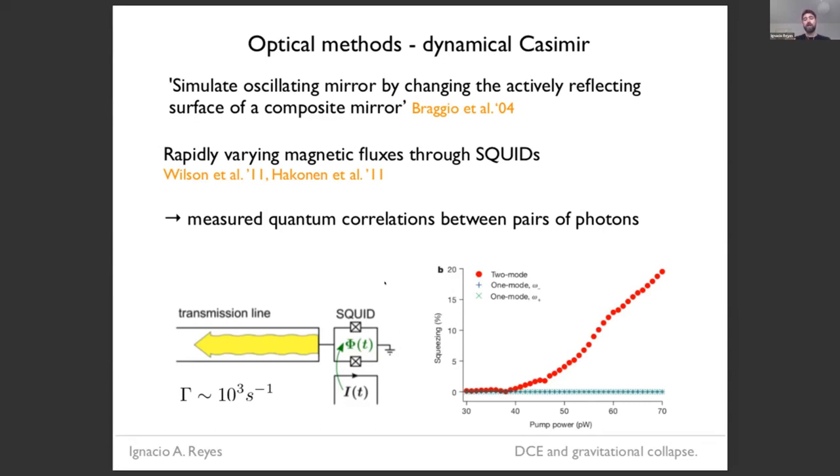And the really cool thing is that not only were they able to measure the photons, but they were able to check that the pairs of photons that came out were in a particular quantum state, a two mode squeeze state, which is amazing. This would be like the analog of being able to measure the two Hawking pairs and checking that they're actually in a bell state, for example. So I think this is super interesting.